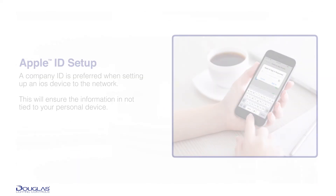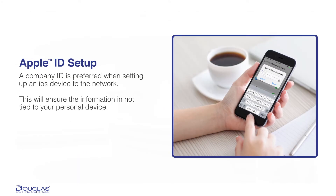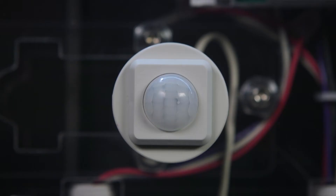Before we get started, it's important for the setup and configuration that the iOS device used is set up with a company Apple ID rather than a personal Apple ID, so that information is not tied to your personal device and personal Apple ID. At this stage, the wireless system has been installed and the system is powered. Each device has an LED that will flash at a one-second interval to show it is waiting to be added to a network.